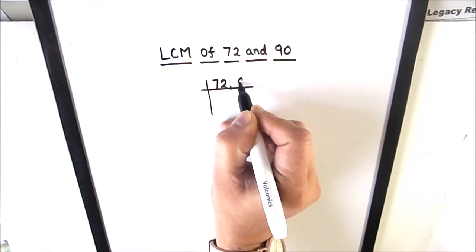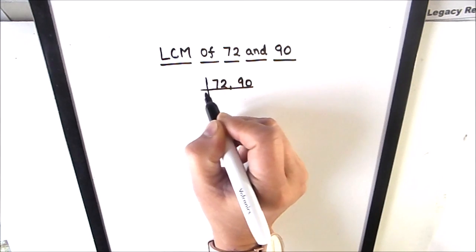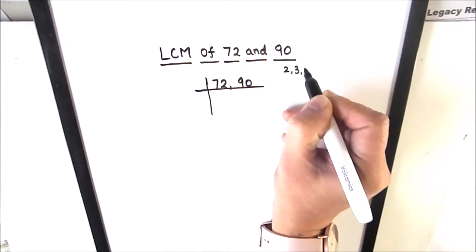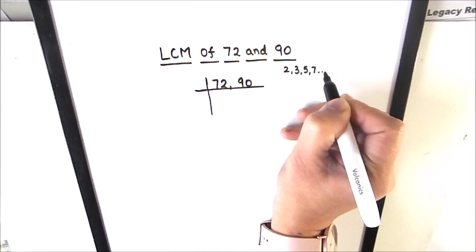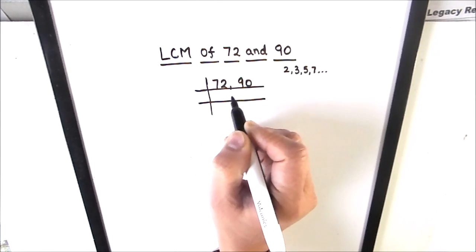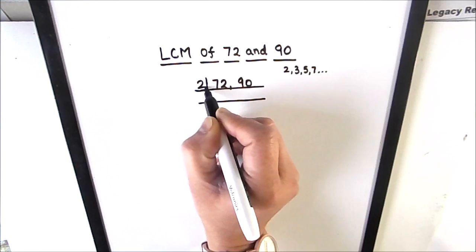We'll write 72 and 90 like this and we'll divide the two numbers. First few prime numbers are 2, 3, 5, 7 and so on. As both the numbers are even, we are going to use the first prime number 2 to divide the two numbers.